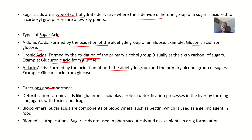Uronic acids like glucuronic acid play a role in the detoxification process in the liver by forming conjugates with toxins and drugs — they combine with these toxins and drugs. Sugar acids are also components of biopolymers such as pectin, which is used as a gelling agent in food.